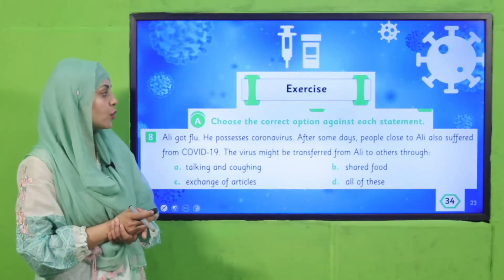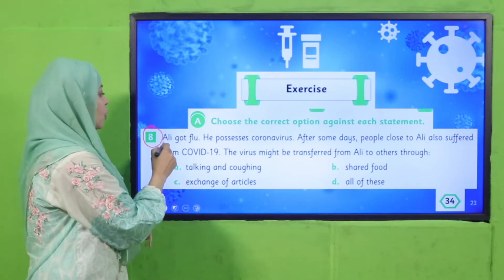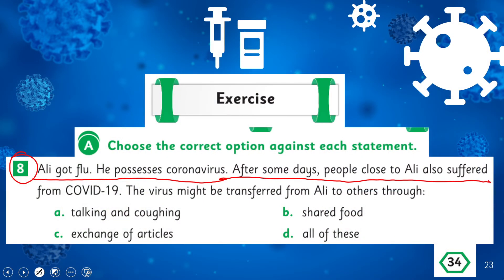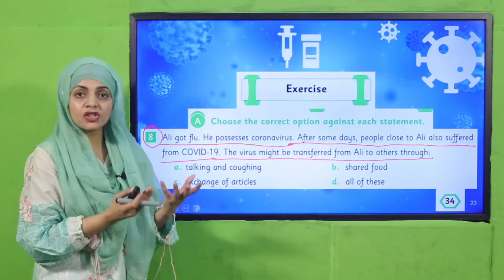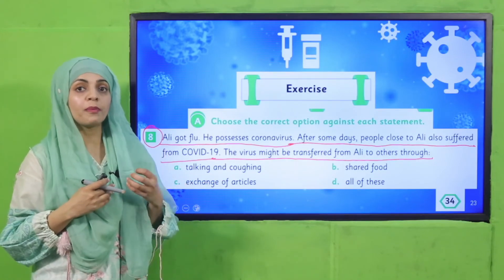For homework, do Exercise A, MCQ number eight: Ali got the flu and possesses coronavirus. After some days, people close to Ali also suffered from COVID-19. The virus might have been transferred from Ali to others through: talking and coughing, shared food, exchange of articles, or all of these.